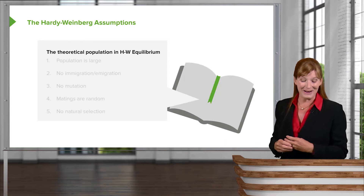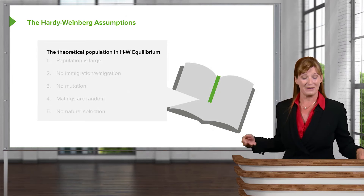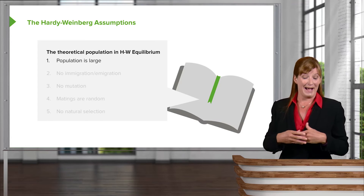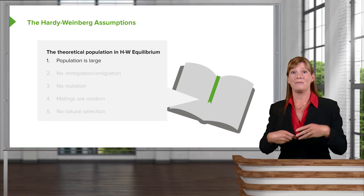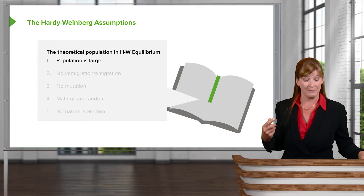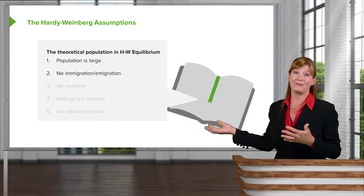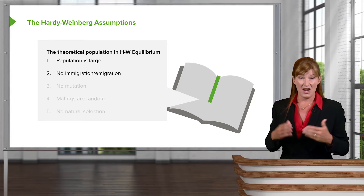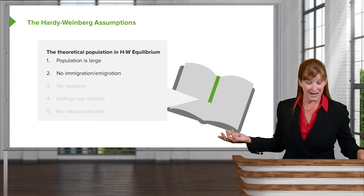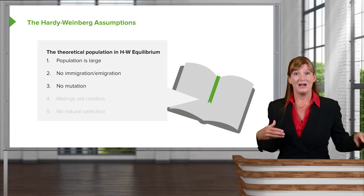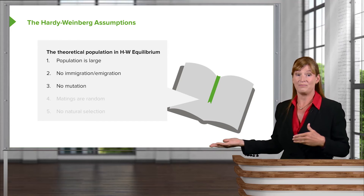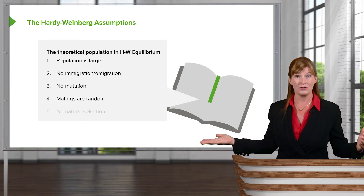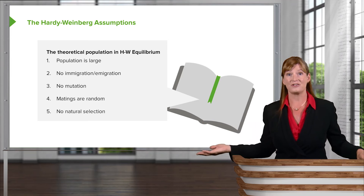Here they are. A theoretical population in Hardy-Weinberg equilibrium has an infinitely large size — definitely not a small population. There is no immigration or emigration into or out of this population with any other population — none. The equilibrium population also has no mutations, and it has totally random mating — no individual choice. And there is no natural selection occurring.